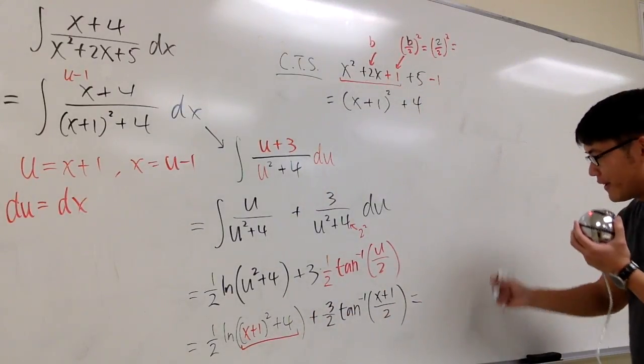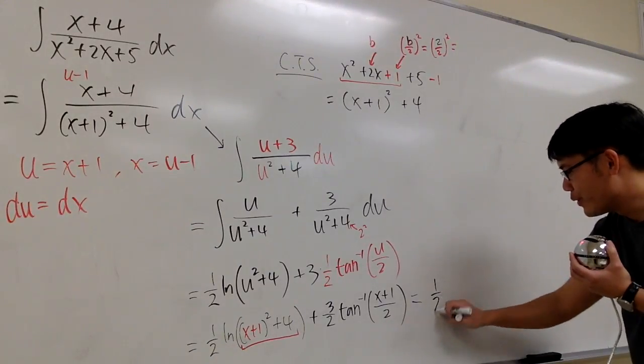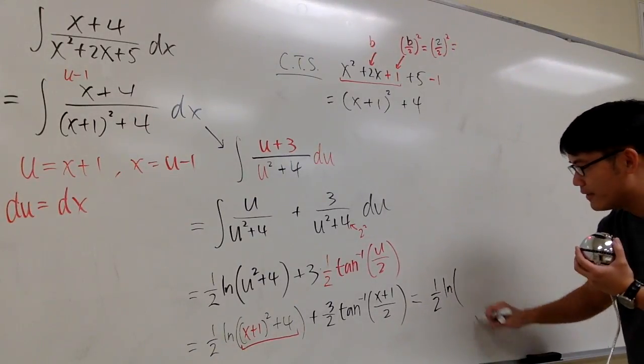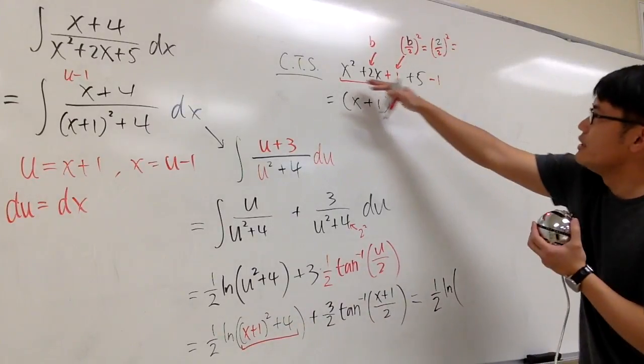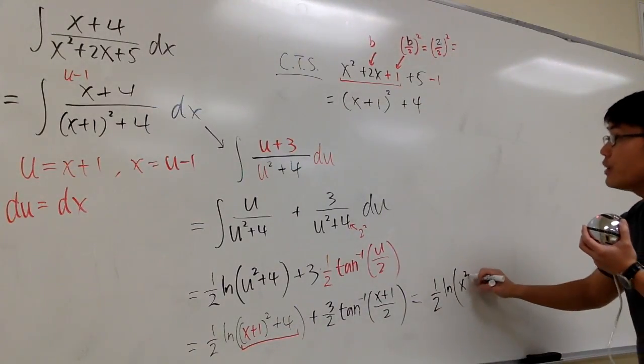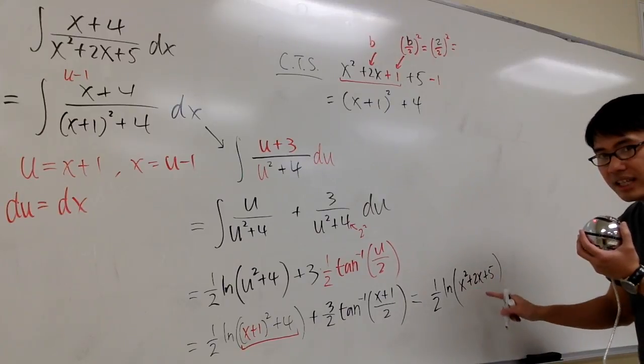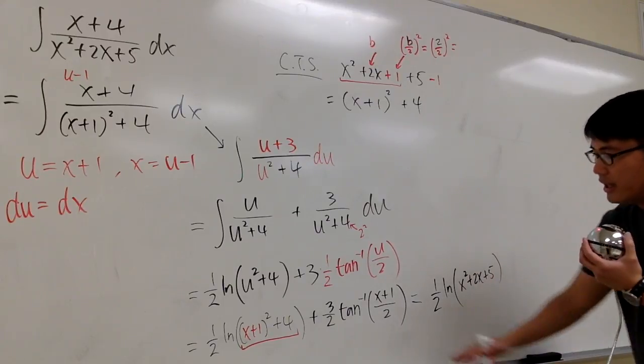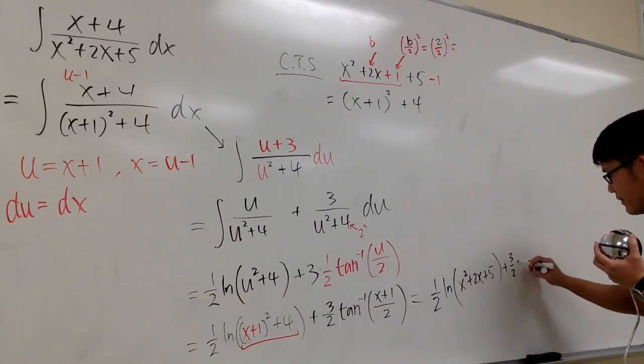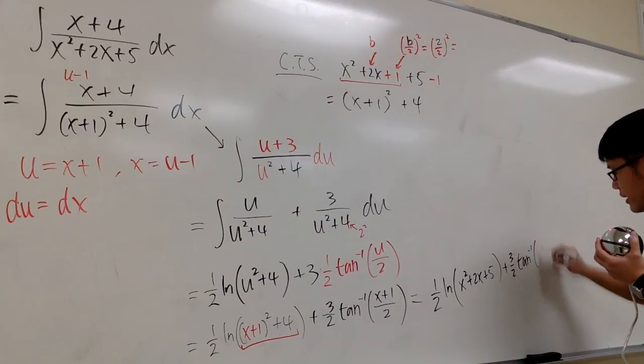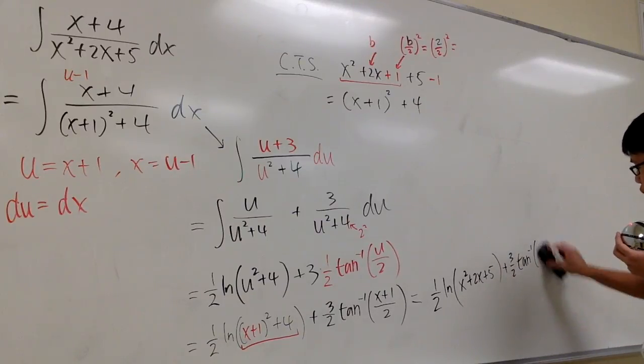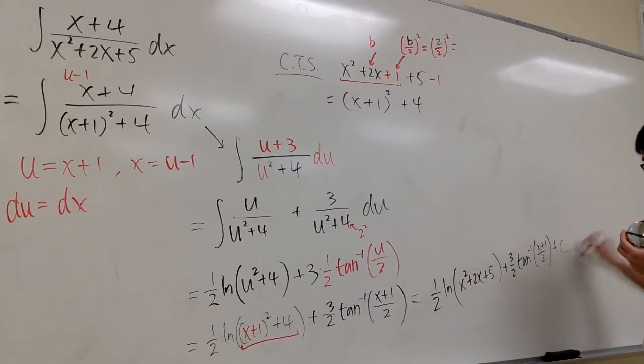So the final answer, the answer in the back of the book, is equal to 1 half ln, this right here is just the original, which is x squared plus 2x plus 5. And this is never negative, so you can just use parentheses. And then we have that part, so we have plus 3 half inverse tangent x plus 1 over 2. And of course, we're done, so we put plus c, and then box the answer. And this is it.